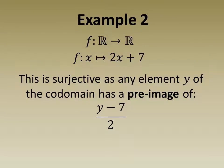In example 2, we consider a function f from the real numbers into the real numbers whose value at x is 2x + 7. This is surjective as any arbitrary element y of the codomain has a pre-image of (y - 7)/2.